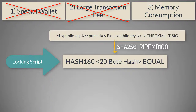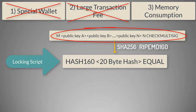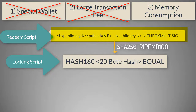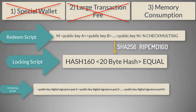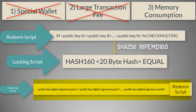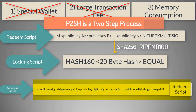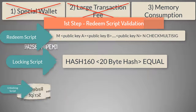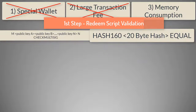Now let us see how the recipient would spend Bitcoin from their multi-sig account. The original script which was hashed to get the P2SH address is called the redeem script. In P2SH, the unlocking script is a combination of digital signatures and the redeem script. P2SH is a two-step process to spend Bitcoin from a multi-sig account. In the first step, the redeem script is validated against the locking script using a stack data structure, very similar to what was discussed in chapter 13.